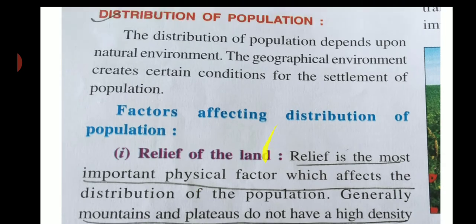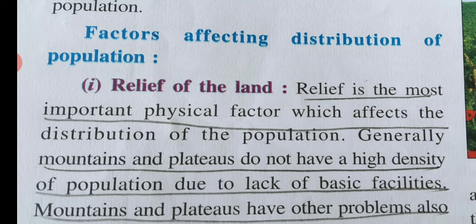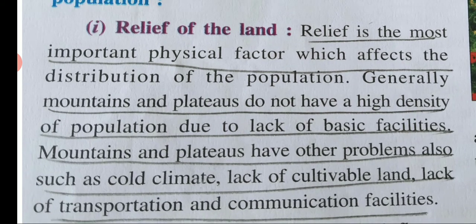Distribution of population depends upon the natural environment. The relief of the land plays a very important role. Mountains and plateaus do not support high population density because the climatic conditions on mountains are not suitable for a proper life. Population is very less there due to lack of basic facilities - lack of cultivable land, lack of transportation and communication - so life exists at a very low level.